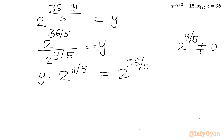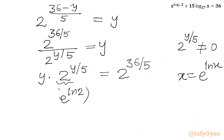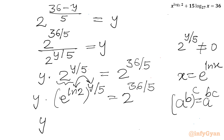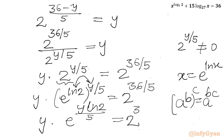Now I use the exponent property x equals e raised to the power ln x. Applying this, I write e raised to the power ln 2, whole power y over 5. Using the property a power b whole power c equals a power b times c, I multiply these powers, giving y times e raised to the power y ln 2 divided by 5, equal to 2 power 36 over 5.